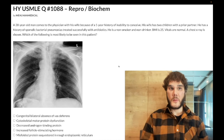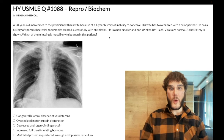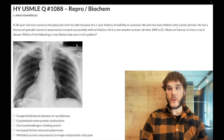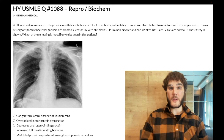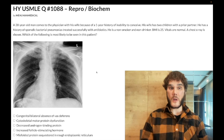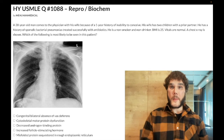We have a medium difficulty reproductive biochem Step 1 question. 28-year-old male, one year inability to conceive with his wife. She has two children from a prior partner. He has a history of sporadic bacterial pneumonias treated successfully with antibiotics. Non-smoker, non-drinker. Vitals normal. Chest X-ray is shown. What's most likely to be seen in this patient?